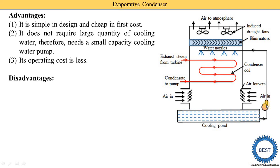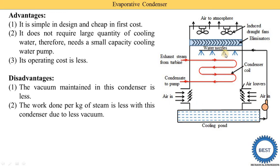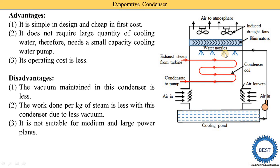The disadvantages of the evaporative condenser are: the vacuum maintained in this condenser is less, because the unit is open to the atmosphere and air is drawn in by the induced fan. Due to this lower vacuum, the work done per kg of steam is also less. It is not suitable for medium and large power plants — it is only suitable for small-size power plants.